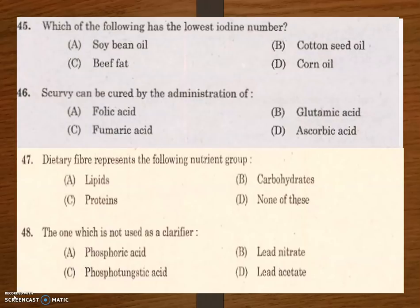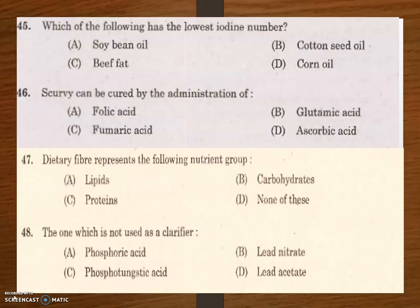Next question: which of the following has the lowest iodine number? Options are soybean oil, cotton seed oil, beef fat, and corn oil. The iodine number (or iodine value/index) is the mass of iodine in grams consumed by 100 grams of a substance. It is used to determine the amount of unsaturation in fatty acids.